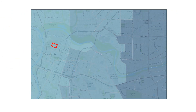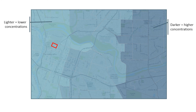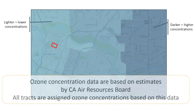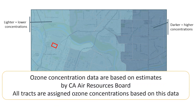Here, for example, a census tract in Sacramento is outlined in red. This color-coded map shows varying ozone concentrations across the Sacramento region. Lighter shades of blue indicate lower concentrations of ozone, while darker blue represents higher concentrations. In this case, the census tract was assigned an ozone concentration based on the levels across the region estimated by the Air Resources Board.